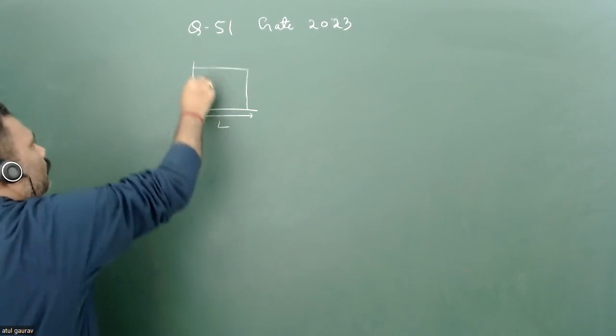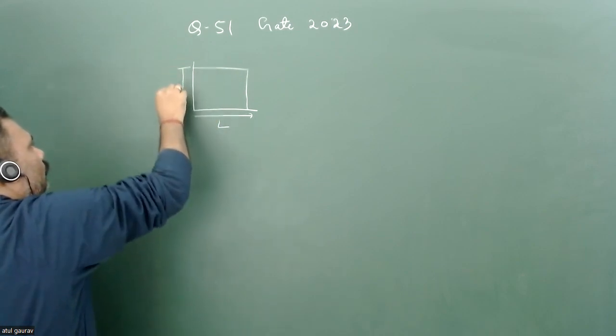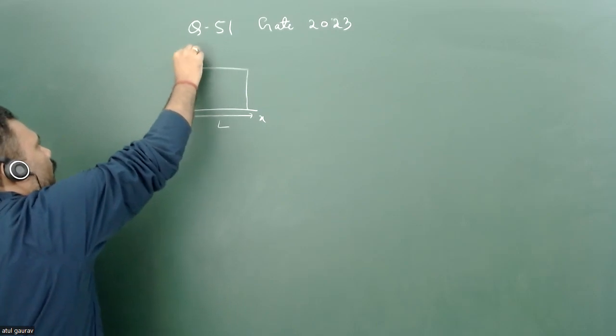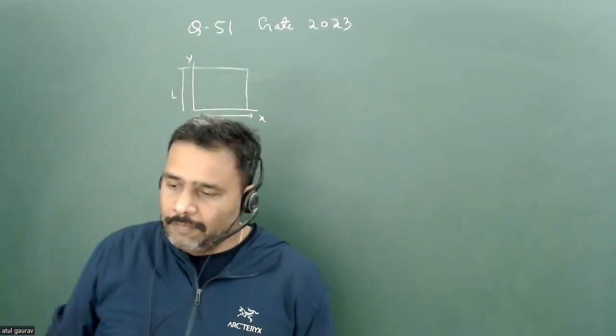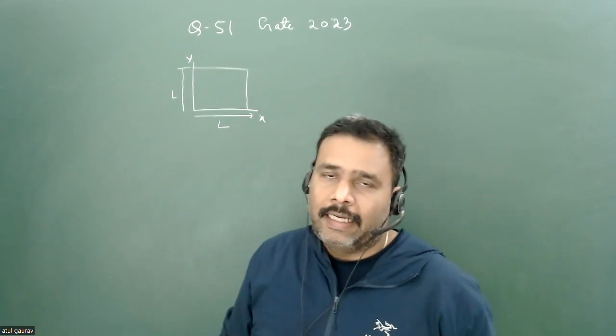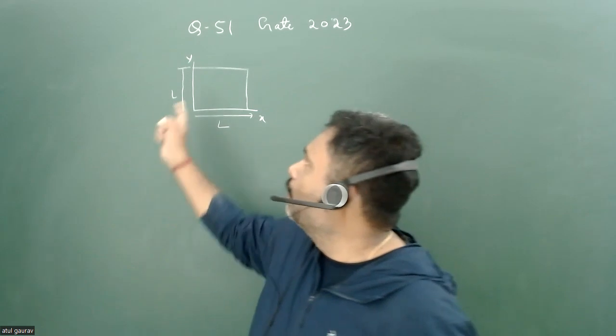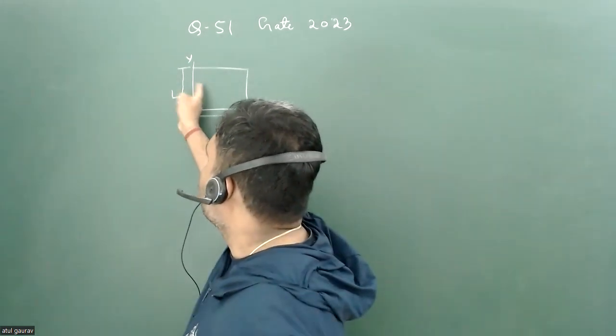So its length along the x-axis is L and along the y-axis is also L. This is a two-dimensional infinite box. It is given that the wave function along the y-axis has the value 0 at the middle of this point, that means y equals L/2.